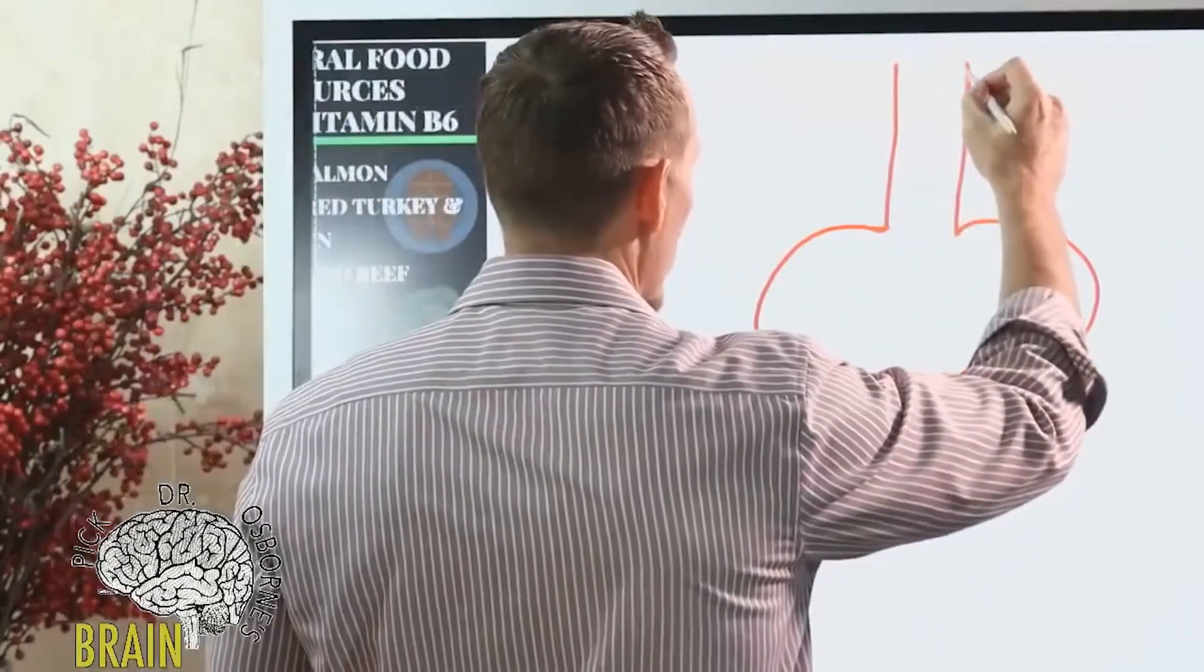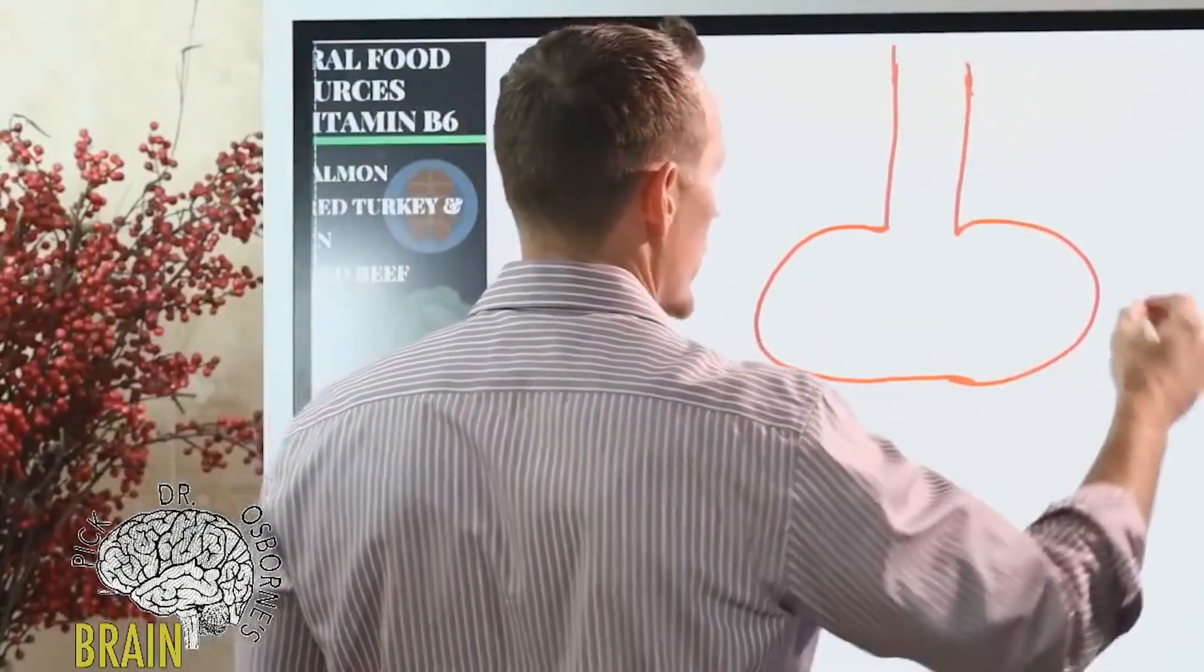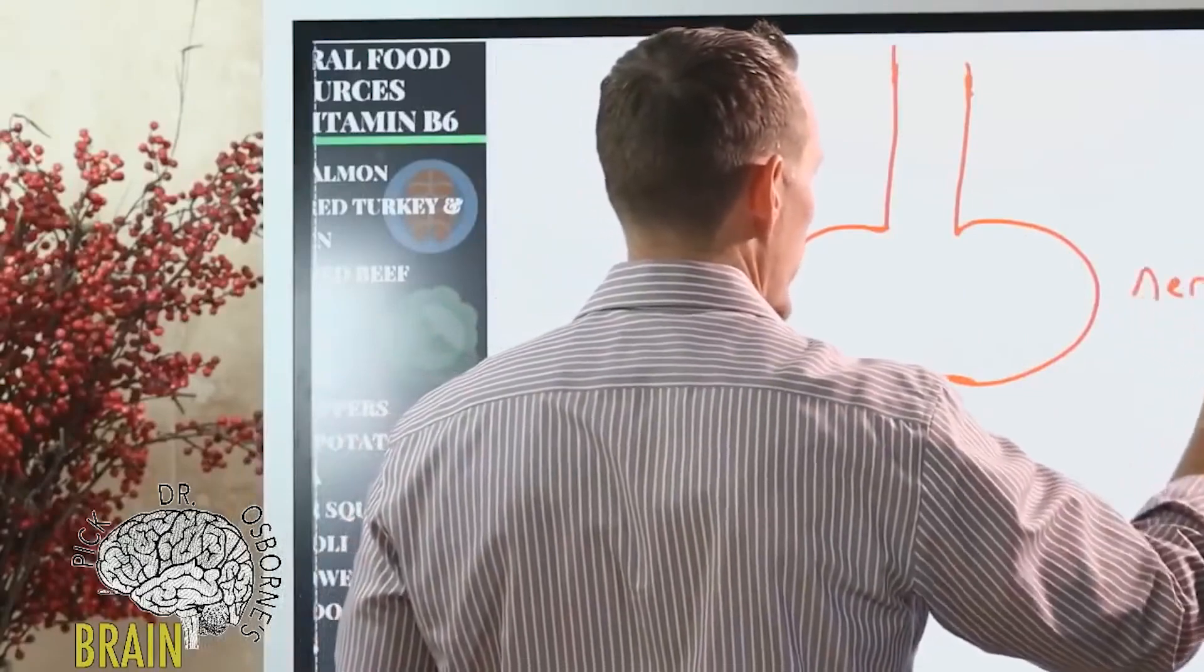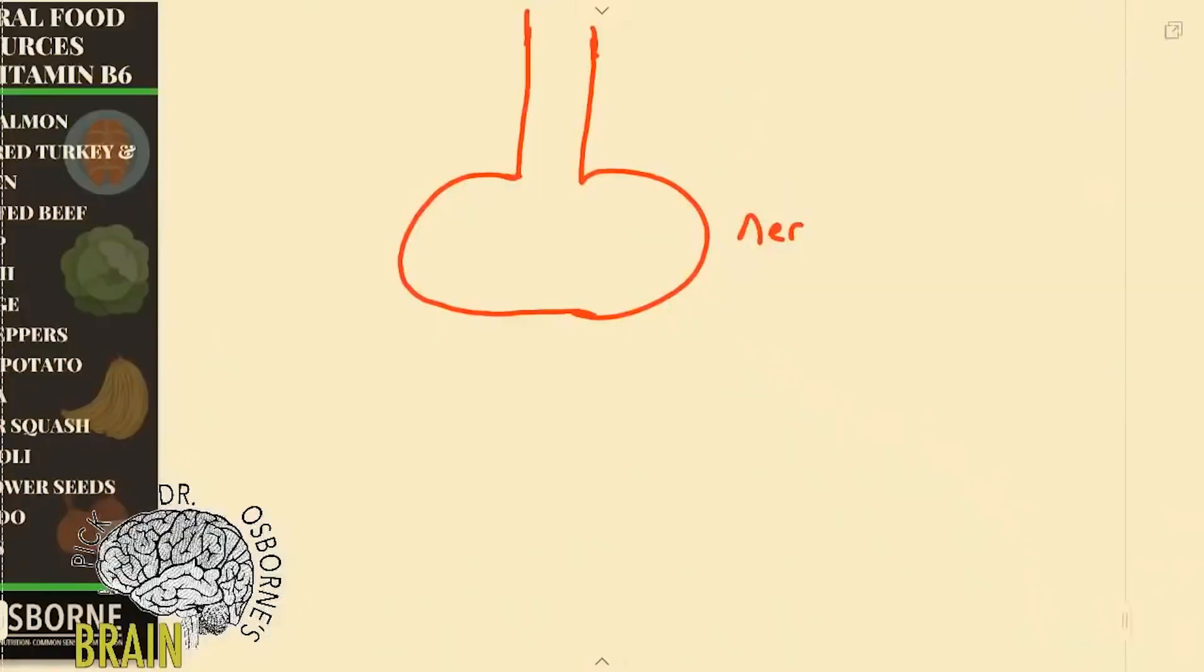So what I'm drawing you here is a nerve ending, also called a synaptic bouton. Let's just call it a nerve ending, that's easier language. What happens is the nerve, the electrical impulse of the nerve, is traveling this way and this is the end or the tip of the nerve. Then generally there's another nerve ending where this nerve can talk to this nerve.